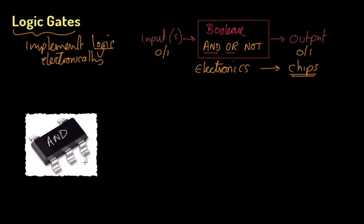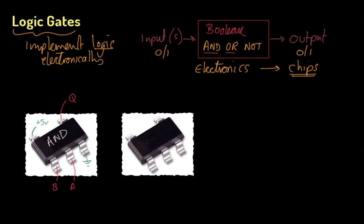I want to show you what the pins do — the pin functions. The one on the far right is the earth connection, and the one on the top left is plus five volts. All electronic components need power, so two of the pins are always taken up with power. That leaves three pins: input A, input B, and the output Q over on the right side.